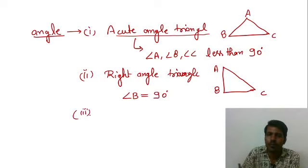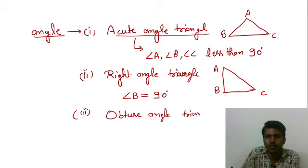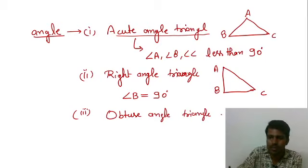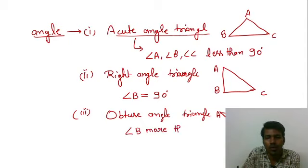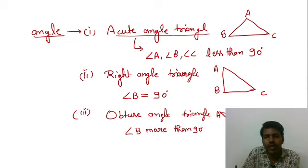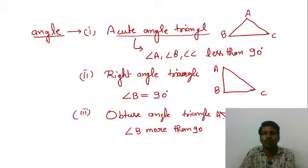Type, Obtuse Angle Triangle. This is something like this. A, B, C. Any of its angle is greater than 90 degree. As you can see in the figure, Angle B, more than 90 degree. Then we can say, this triangle is Obtuse Angle Triangle. I hope you get it.